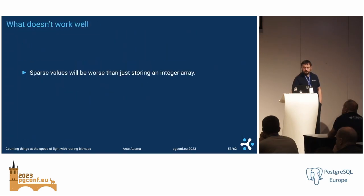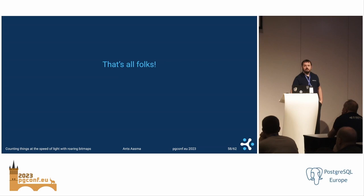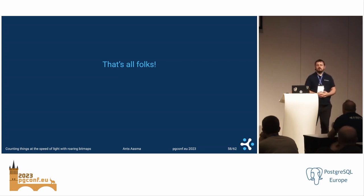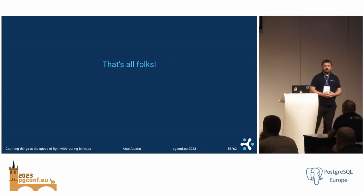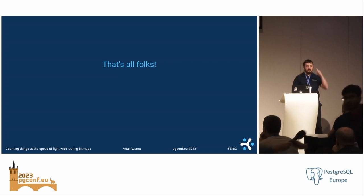Question: can this method also speed up window functions — for example, finding the newest document or biggest document in some category? Yes, I think so. There is a maximum operation available that you can find. But it's hard to tell without the exact use case whether it works for that specific one or not.